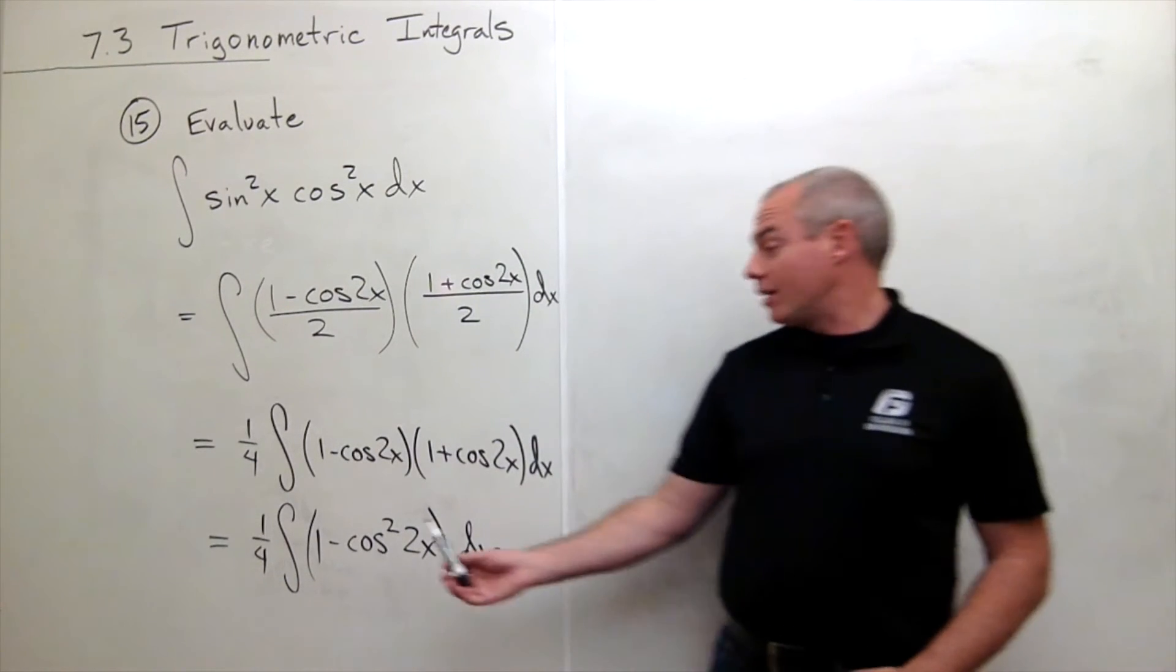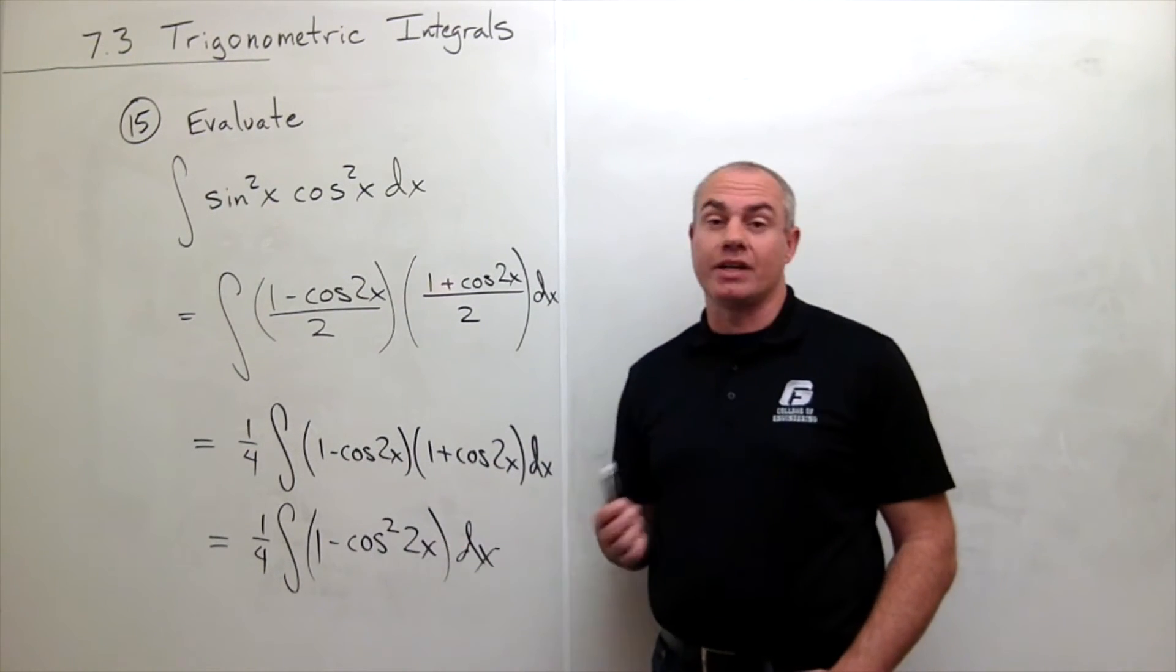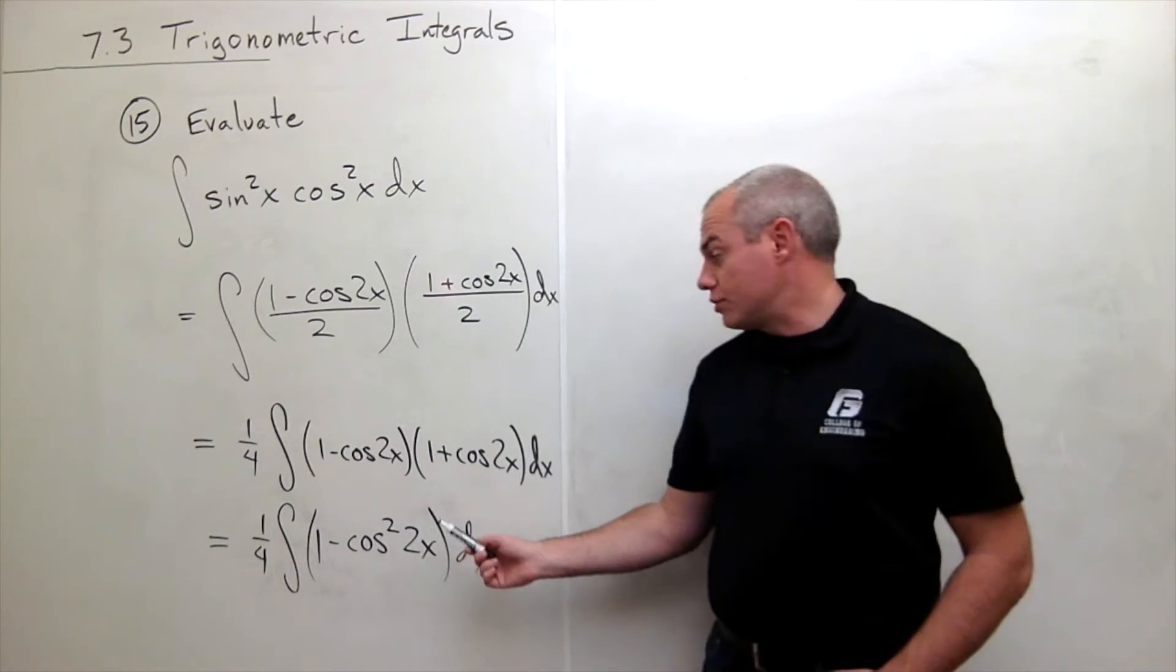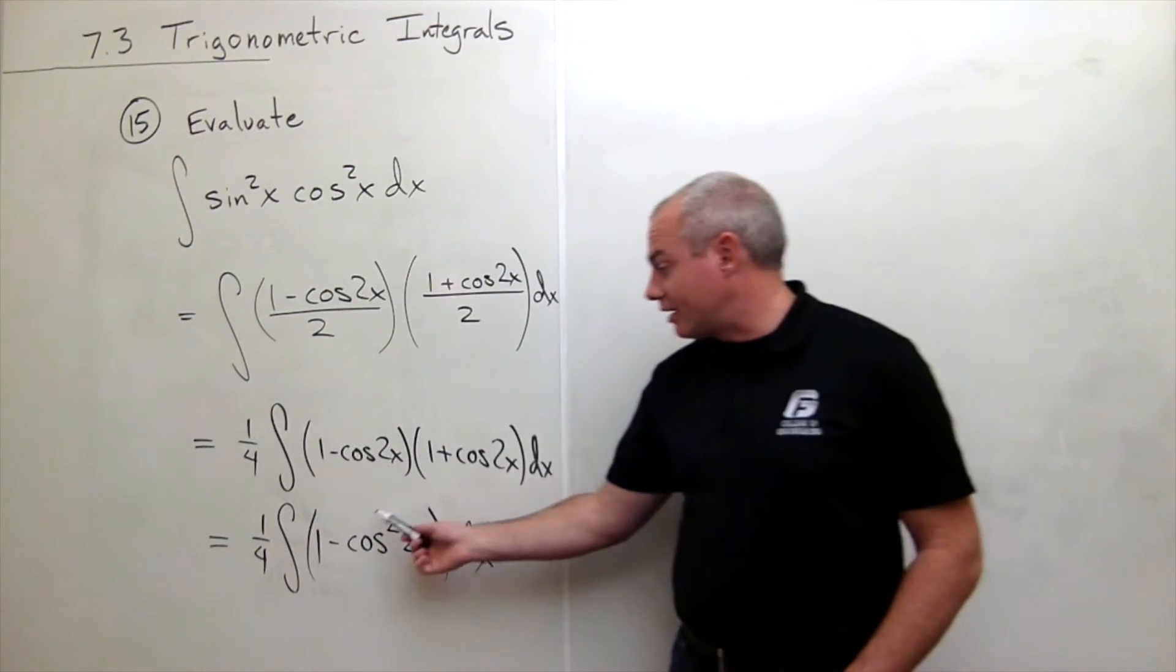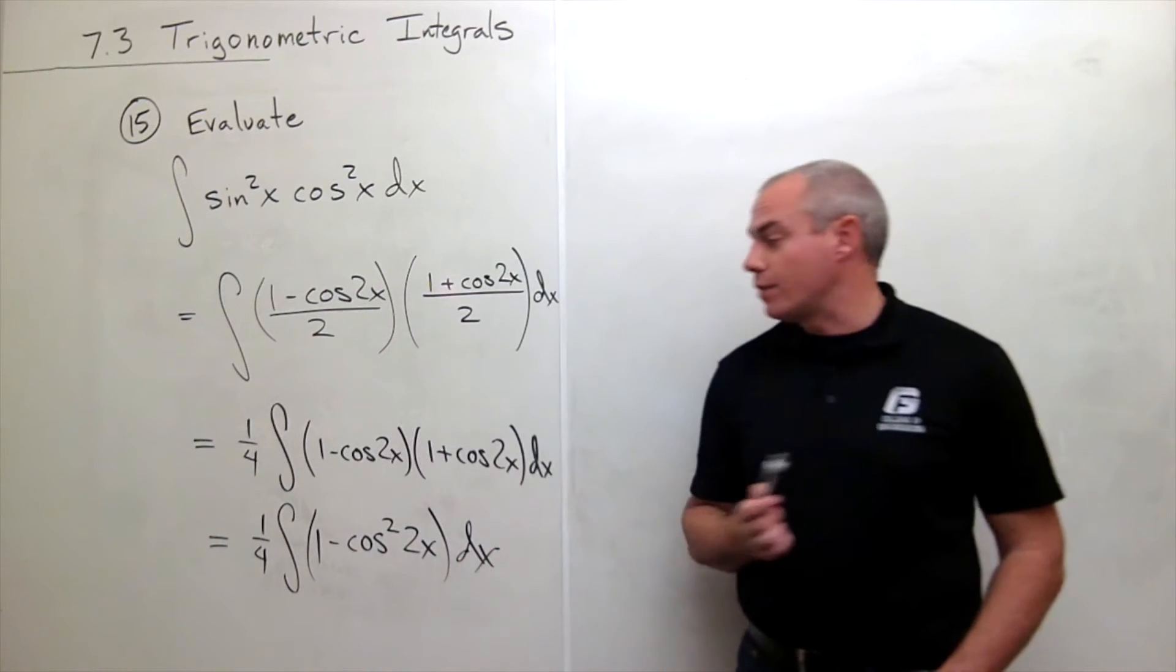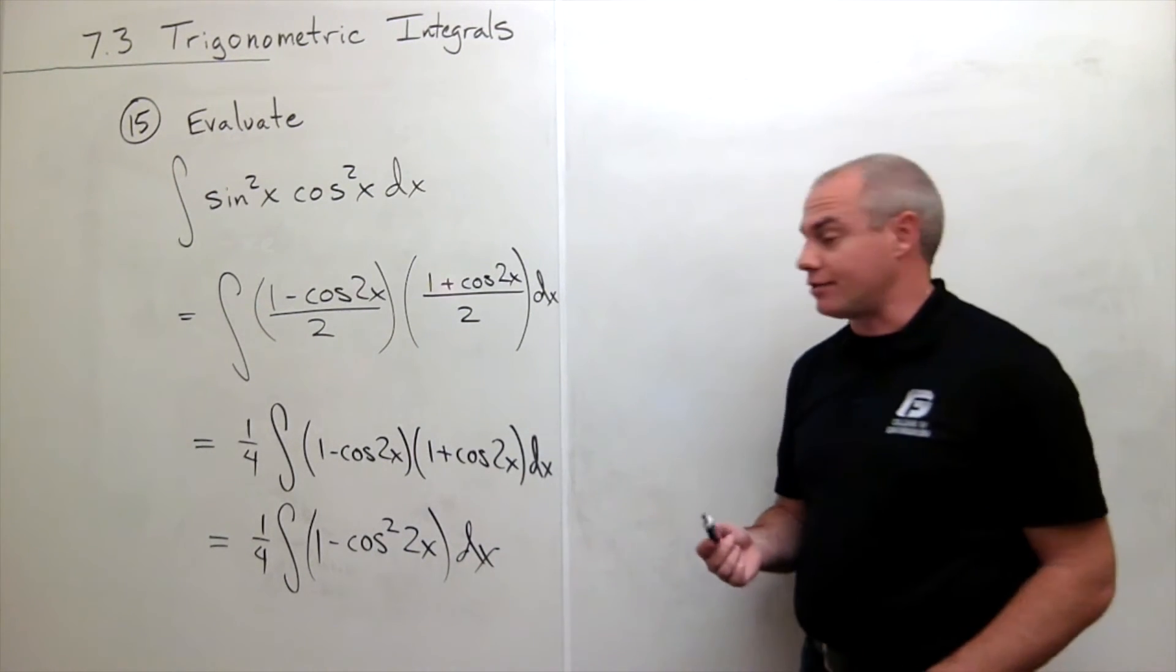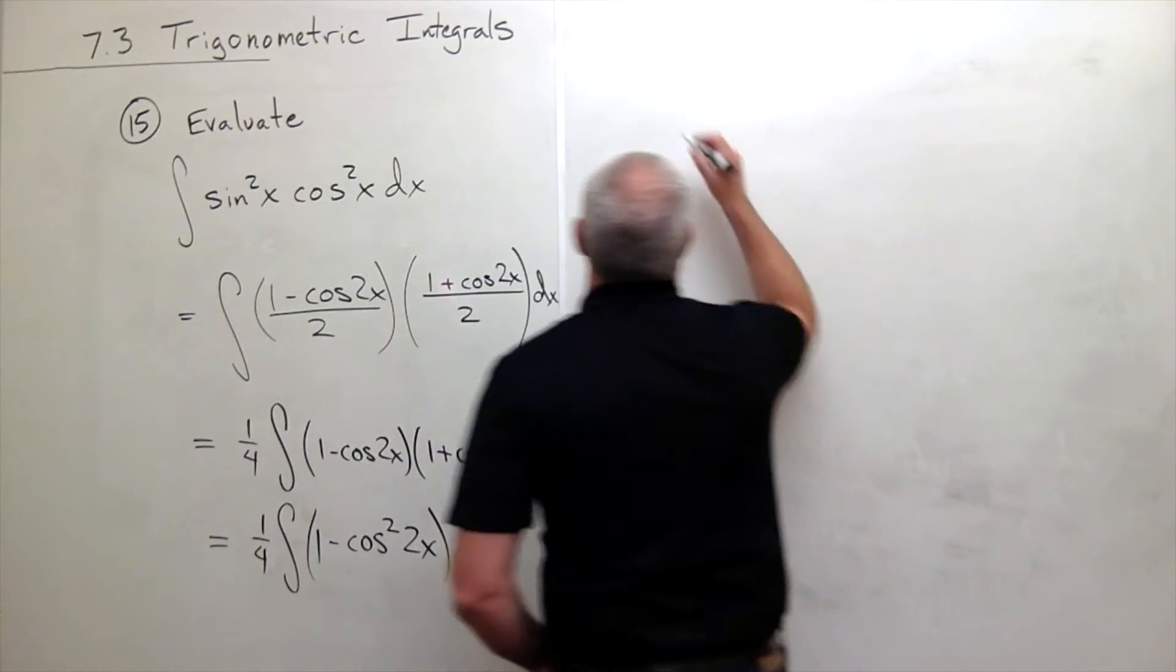But we do know that when I have a cosine raised to an even power, I should use a half angle identity. So let's use a half angle identity again on cosine squared of 2x and put it in a form that I can take an antiderivative of.